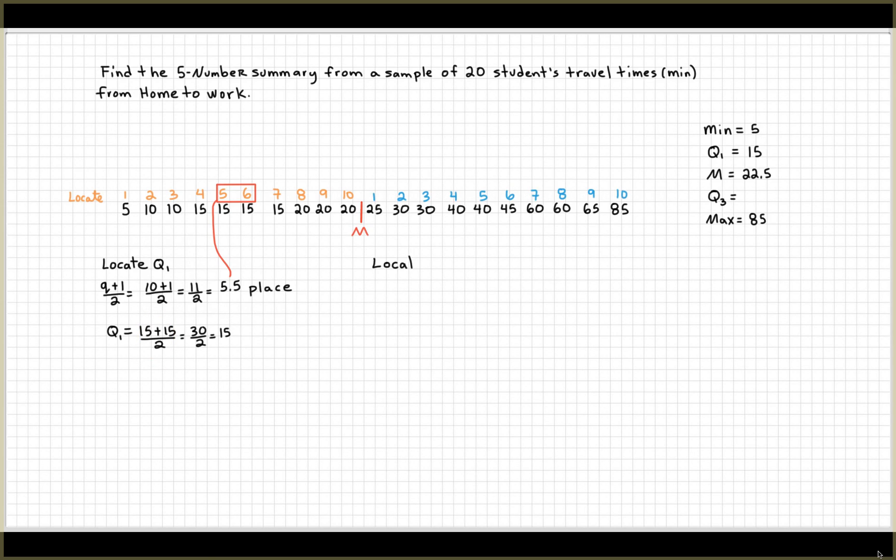Then, let's look at the other half, 1 through 10. Let's locate Q3. Same thing, (Q+1)/2. Q in this case is again 10 values, not 20. That would be n. So that's 10 plus 1 over 2 is 5.5 place, which is between 5 and 6.